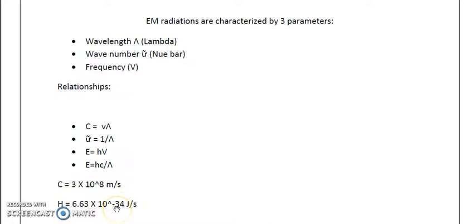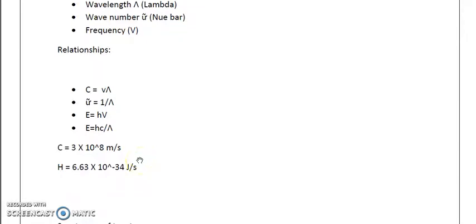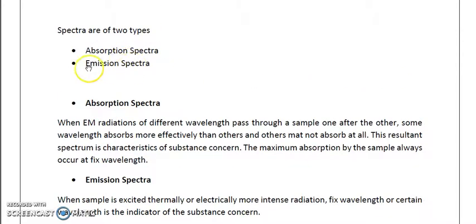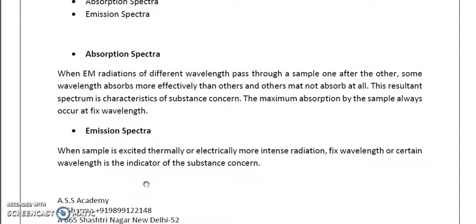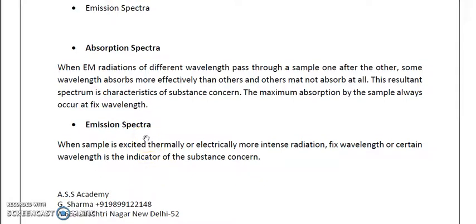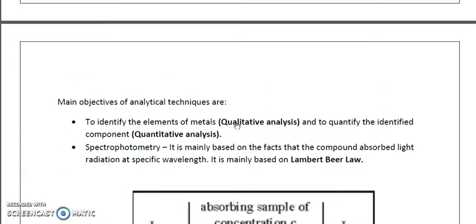The spectrum of electromagnetic radiations is of two types: absorption spectrum and emission spectrum. In absorption spectrum, a radiation source is present, the sample absorbs certain wavelengths, and the remaining radiation is detected by a spectrophotometer. In emission spectrum, the sample itself is thermally or electrically excited, and it radiates electromagnetic radiation which is then detected by the spectrophotometer.